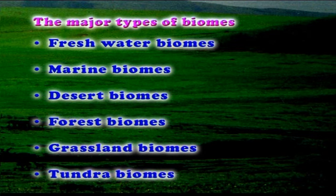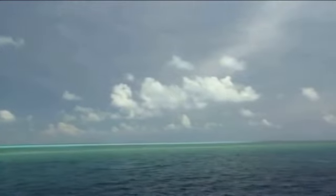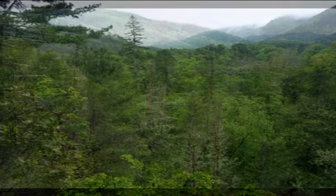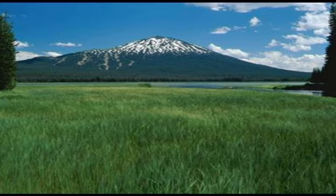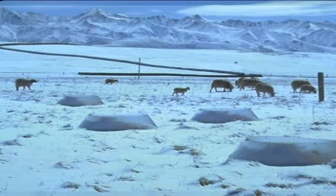Six major types of biomes exist in the world: freshwater ecosystems, marine biomes, desert biomes, forest biomes, grassland biomes, and tundra biomes. The freshwater biomes include ponds, lakes, streams, rivers, and wetlands. The marine biomes include oceans, corals, and estuaries. The desert biomes include hot and dry, semi-arid, coastal, and cold deserts. The forest biomes include tropical forests, temperate forests, and boreal forests. Grassland biomes include tropical grassland, temperate grassland, and savanna grasslands. The tundra biomes include the arctic tundra and the alpine tundra.